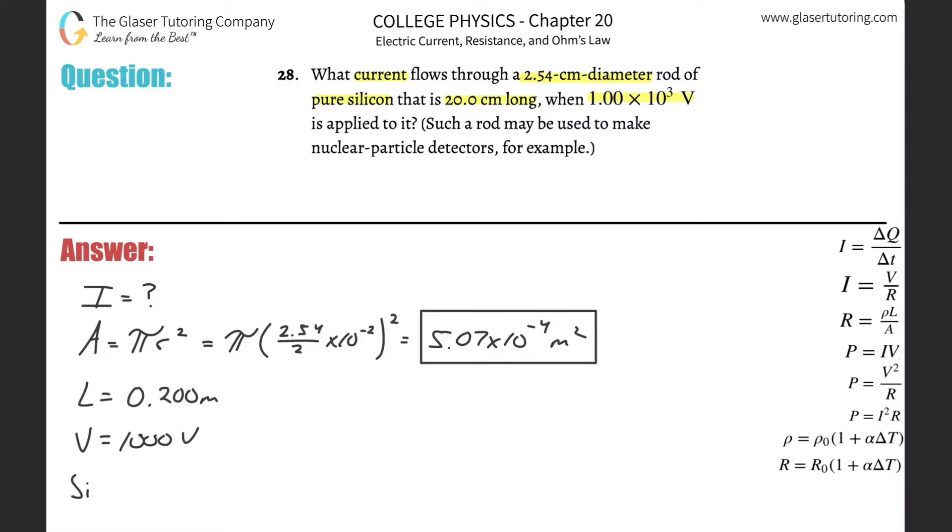So what does that mean? Well, that tells us now, or we can find this. We got to look it up in the table. We know the resistivity then of that particular piece of silicon. Okay. What is it? It's 2,300. 2,300, if you look that up in the table, ohm meter.